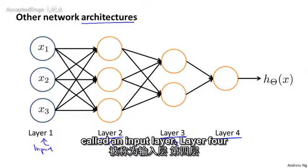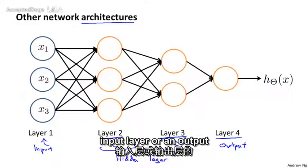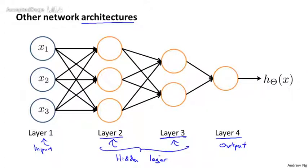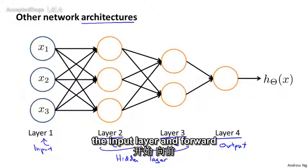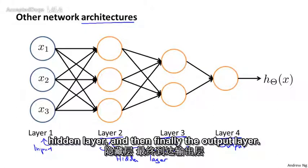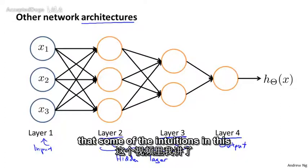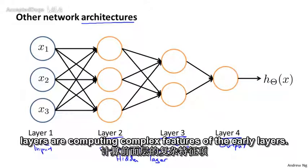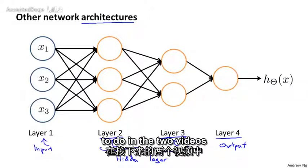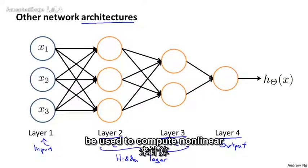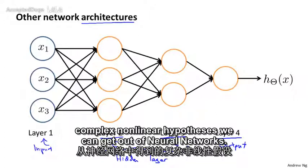So hopefully from this video you've gotten a sense of how the feedforward propagation step in a neural network works — where you start from the activations of the input layer and forward propagate to the first hidden layer, then the second hidden layer, and finally the output layer — and you also saw how we can vectorize that computation. In the next two videos I'd like to work through a detailed example of how a neural network can be used to compute nonlinear functions of the input, which should give you a good sense of the sorts of complex nonlinear hypotheses we can get out of neural networks.